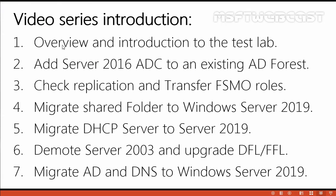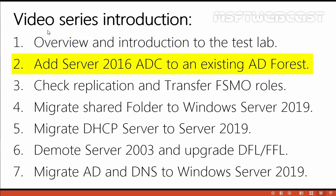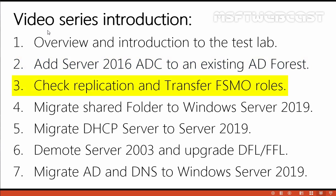Let's take a look at the slide. This is the video series introduction. We will have a total of 7 videos in this series. In the first video — this video — we will take an overview of our test lab created in VirtualBox and see the configuration of our existing Windows Server 2003 Active Directory forest. In the second part, we will add Windows Server 2016 as an additional domain controller to our existing Active Directory forest. In the third part, we will check replication between the Windows Server 2003 and Windows Server 2016 domain controllers, and once replication completes successfully, we will transfer FSMO roles from Windows Server 2003 to Windows Server 2016.